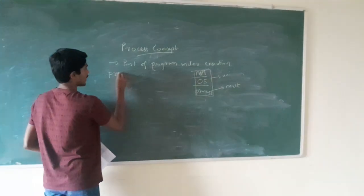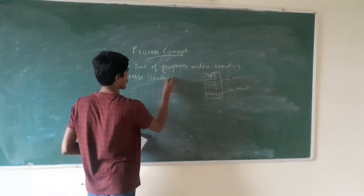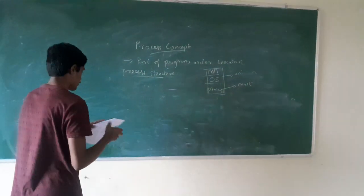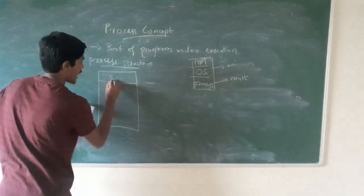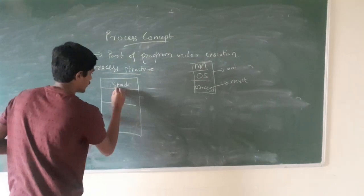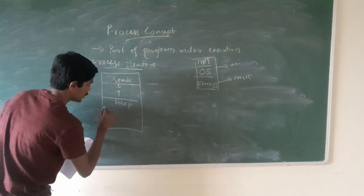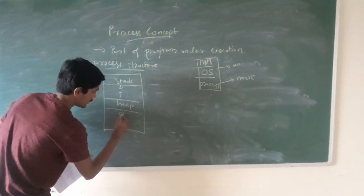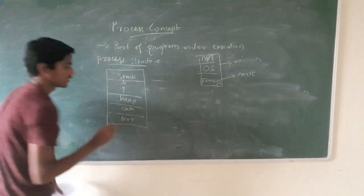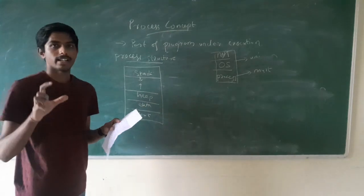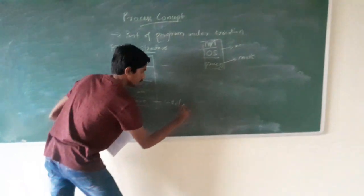Process structure is basically divided into several sections. First is the text section. Next is the heap section. Next is the data section. The text section contains the code — that is, a set of instructions that is being executed.